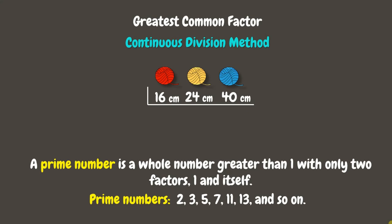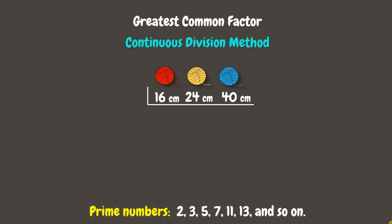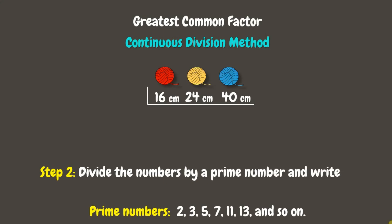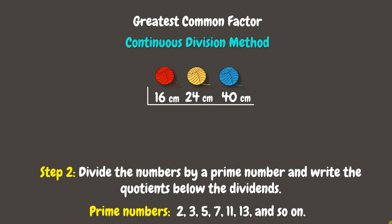For Step 2, let's divide the numbers by a prime number and write the quotients below the dividends. Start by dividing by the smallest prime number, which is 2. 16 divided by 2 is 8, 24 divided by 2 is 12, while 40 divided by 2 is 20.